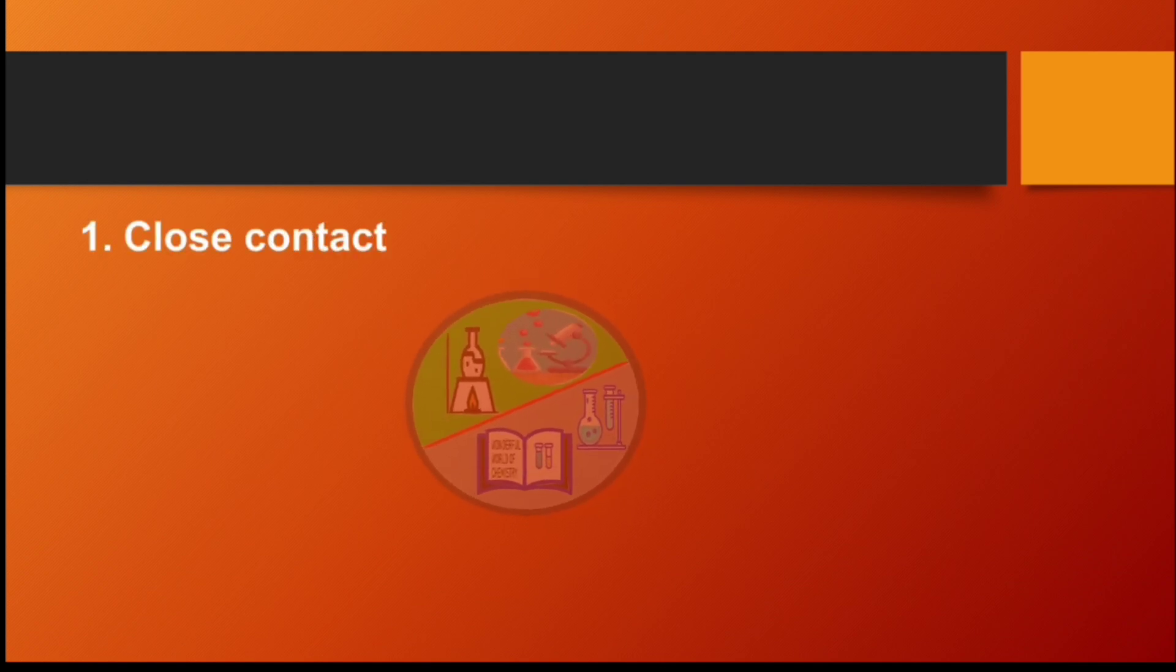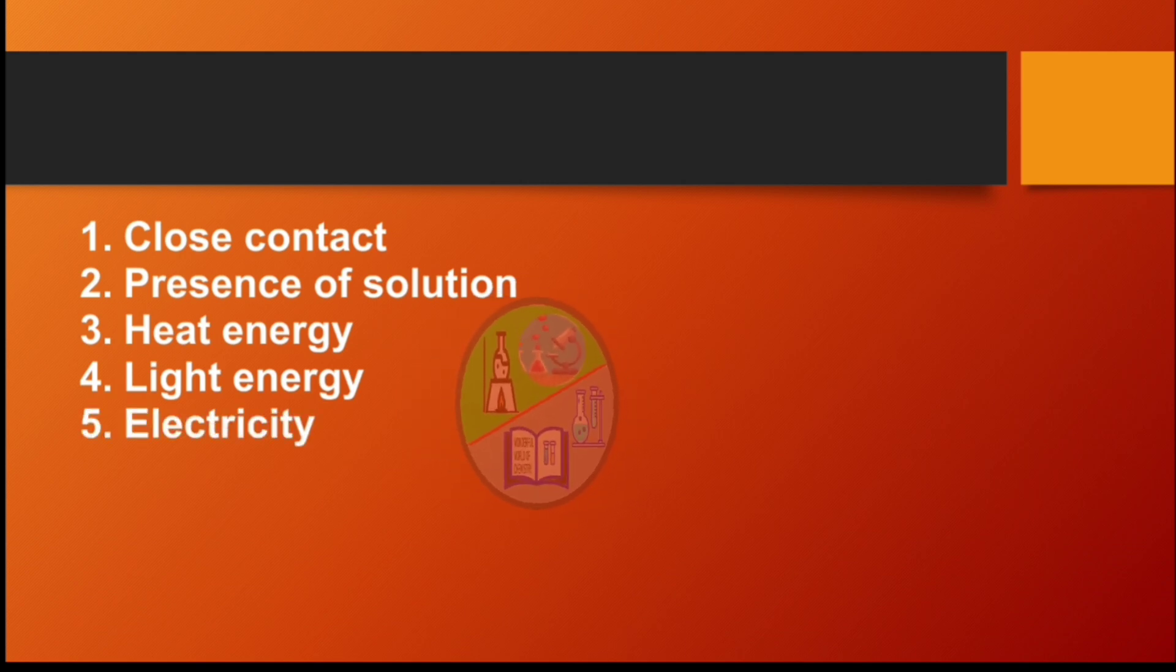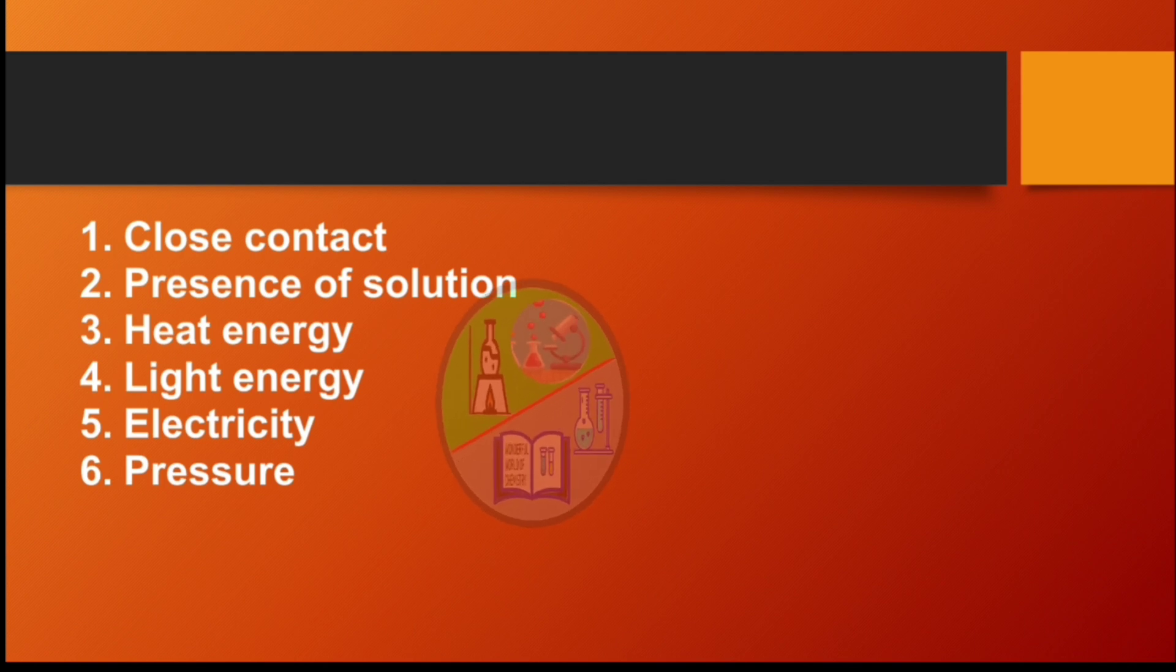As we already know, atoms rearrange themselves to create one or more new compounds. Some chemical reactions take place on their own, but there are certain reactions for which few necessary conditions are essential to take place. The conditions are as follows: first is close contact, second presence of solution, third heat energy, fourth light energy, fifth electricity, sixth pressure, and seventh catalyst. So let's elaborate each condition and see few examples.